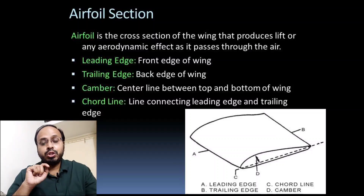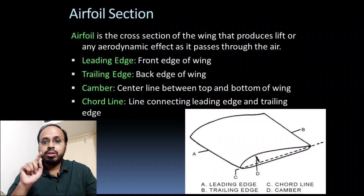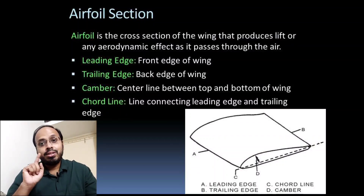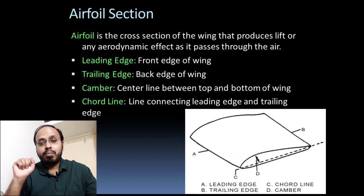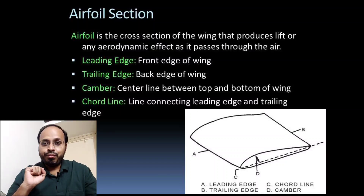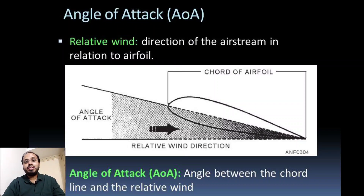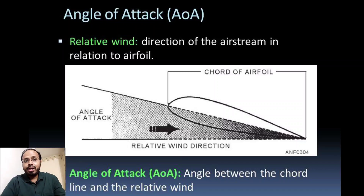Every student should know this nomenclature because the airfoil section of the wing is very important — it creates differences in fluid properties with the help of Bernoulli's theorem and enables lift creation. Angle of attack changes the coefficient of lift as seen in the lift equation. The angle of attack is the angle between the chord line and the relative wind direction.